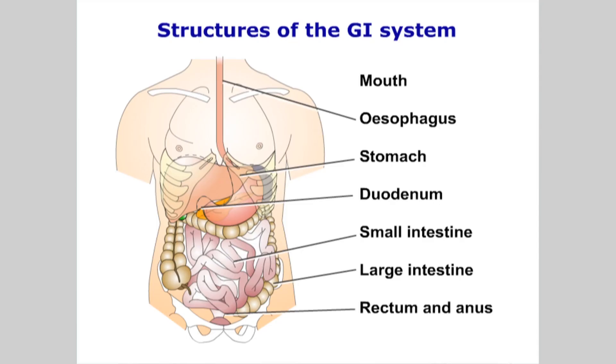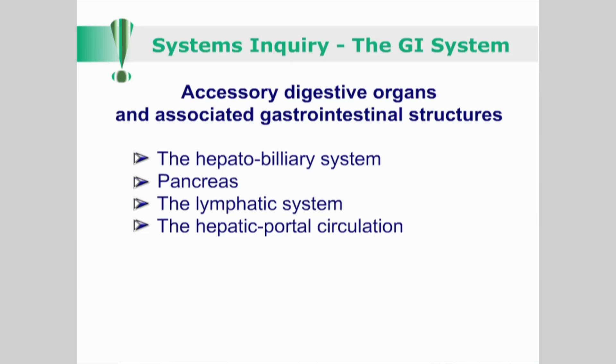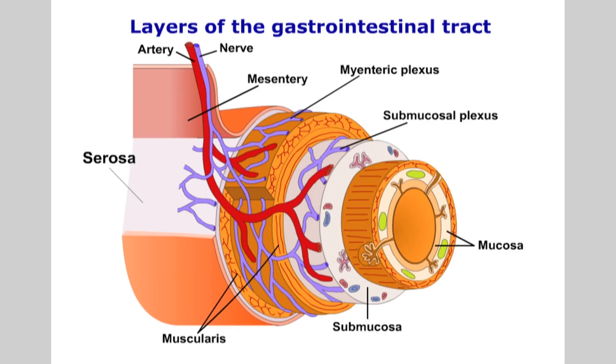The gastrointestinal system begins at the mouth and ends at the anus. We therefore need to consider the mouth, esophagus, stomach, duodenum, small and large intestine, the rectum and anus. Also consider the accessory organs and their functional integration, including the hepatobiliary system, the pancreas, the lymphatic system and the hepatic portal circulation.